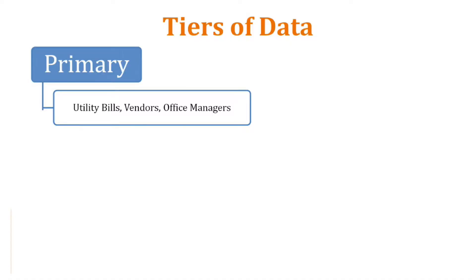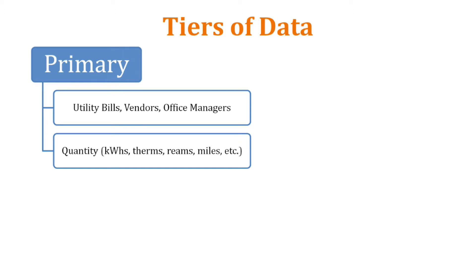I'm going to walk you through the different tiers of data and ways to get your data. The tiers are primary and secondary. Primary data is data that you pull directly from bills — if it's energy, you're pulling it directly from utility bills, or for paper, you're pulling it from a vendor invoice or from your office manager.